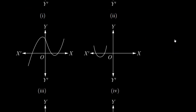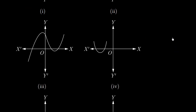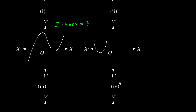Now, this third part — how many zeros does it have? Three: one, two, three. Because the intersection points on the x-axis are three. Therefore, zeros are three.